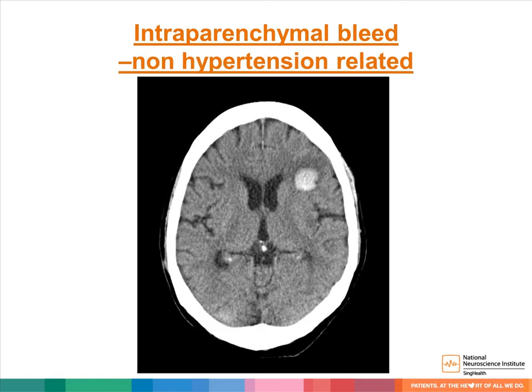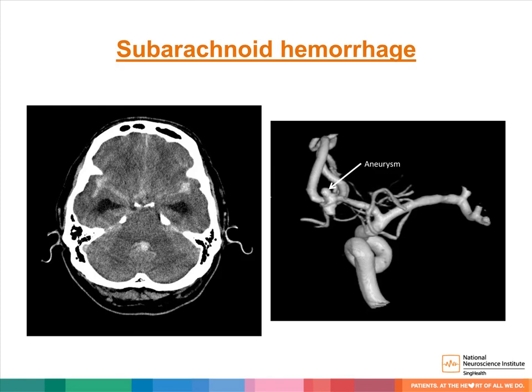This example shows a left frontal hemorrhage that is not hypertension-related. In this case, other causes of the hemorrhage need to be searched for. Another type of intracranial hemorrhage that can be seen in patients presenting with stroke is subarachnoid hemorrhage. In this example, we see diffuse subarachnoid hemorrhage associated with hydrocephalus due to a ruptured anterior communicating artery aneurysm.